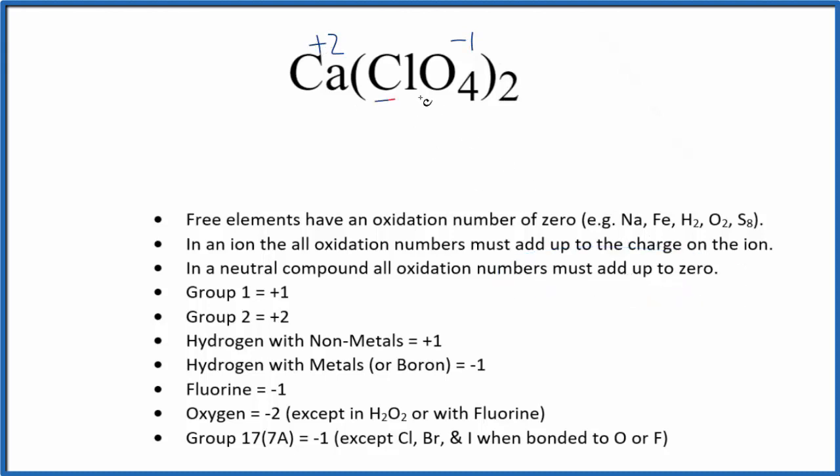If you want to figure out the chlorine, you have to do a little more work. Let's just look at the chlorate ion here to figure out chlorine. Because we know in an ion, all the oxidation numbers add up to the charge on the ion. So we could say we don't know what the chlorine is.